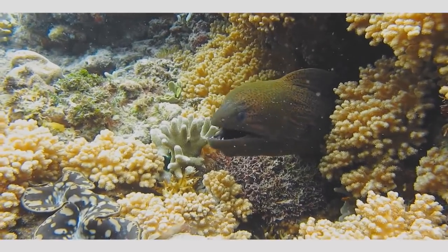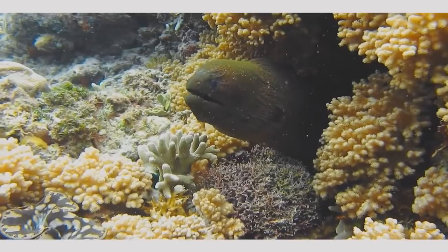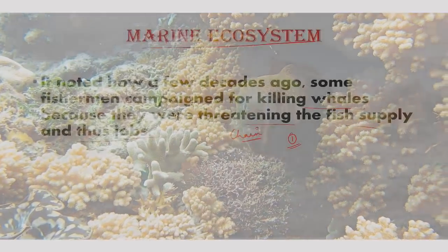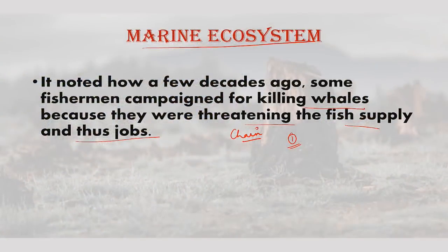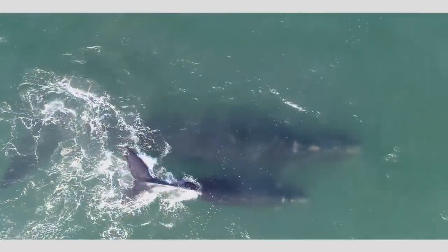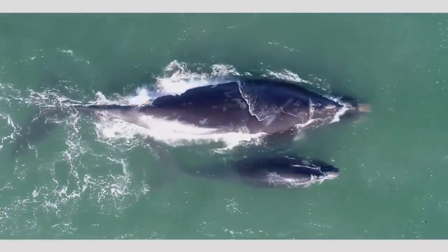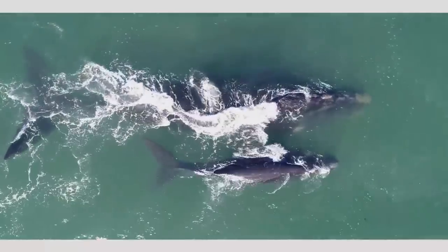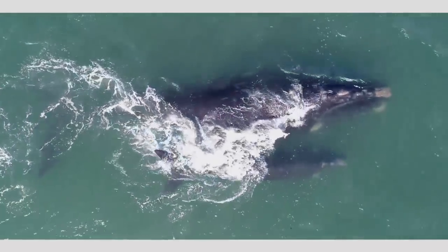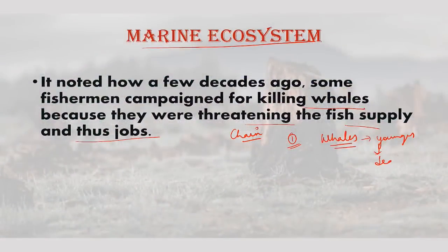The chain of events led to a loss of jobs. The massive reduction in local whale population meant killer whales in the region, usually preying on younger whales, moved to other animals such as seals. Seals were becoming prey. Whale numbers also started declining because they were eating their young ones. Seal numbers were also declining. Then killer whales targeted otters.